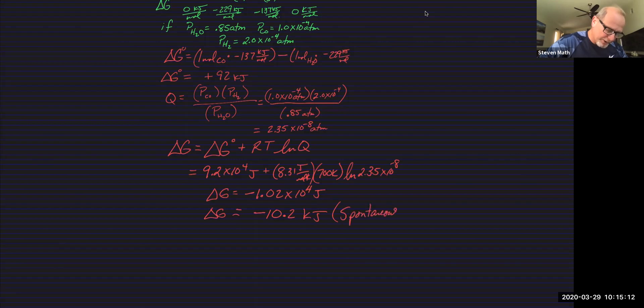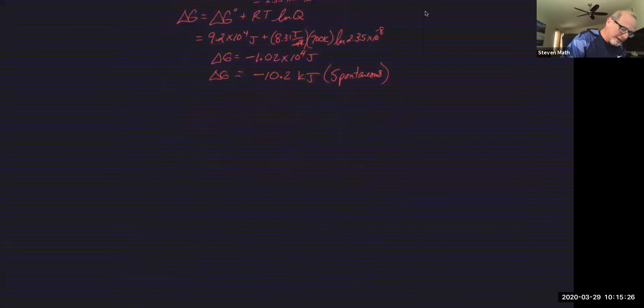And that's really our next topic here that I want to talk to you about, is when G is negative, this is spontaneous. This reaction is going to proceed from left to right. Well, that happened here because of what we did with the pressures and the temperatures. We were varying it with Q.